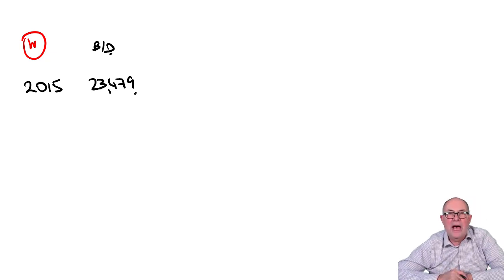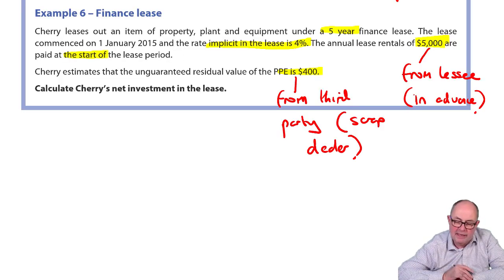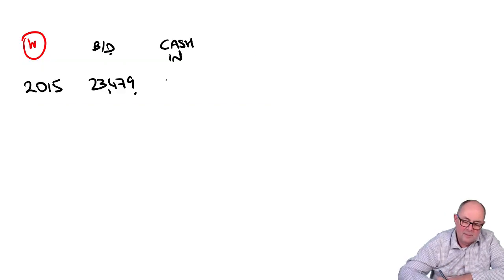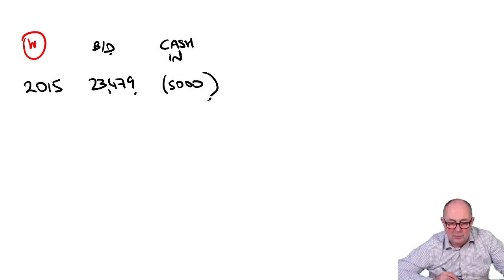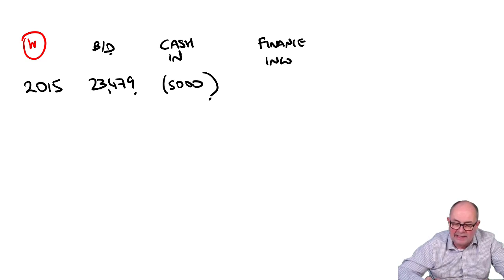The first thing that happened is that the customer paid me some money. So, we had some cash coming in. Lovely. How much cash came in? It was $5,000. Interest will now accrue on the net amount. So, in the P&L, I'm now going to have my finance income.